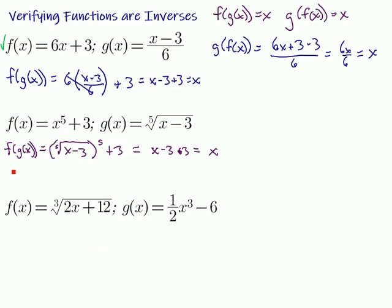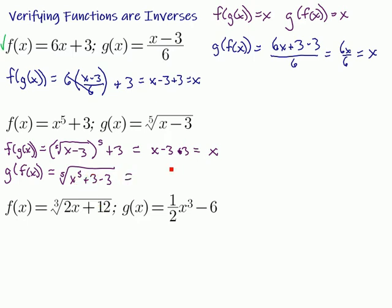Now we've got to go the other way: g of f of x. I'm going to put f of x in for the x in this function. So we have the fifth root of (x to the fifth plus 3) minus 3. The plus 3 and minus 3 cancel, and so we have the fifth root of x to the fifth, which is just x. So again, we have verified that these two are indeed inverses of each other.